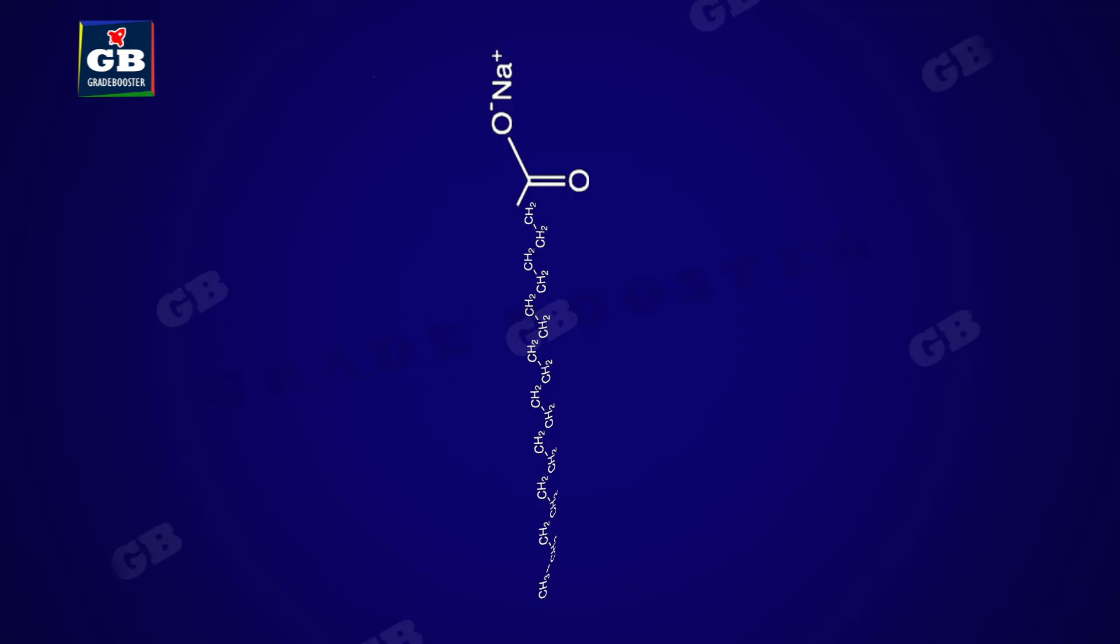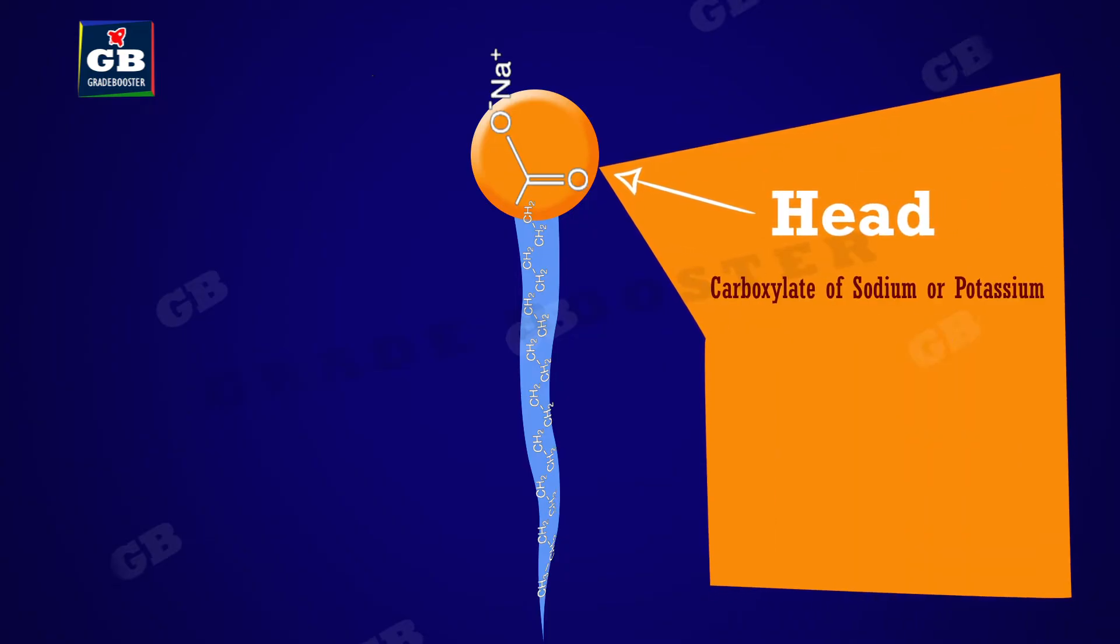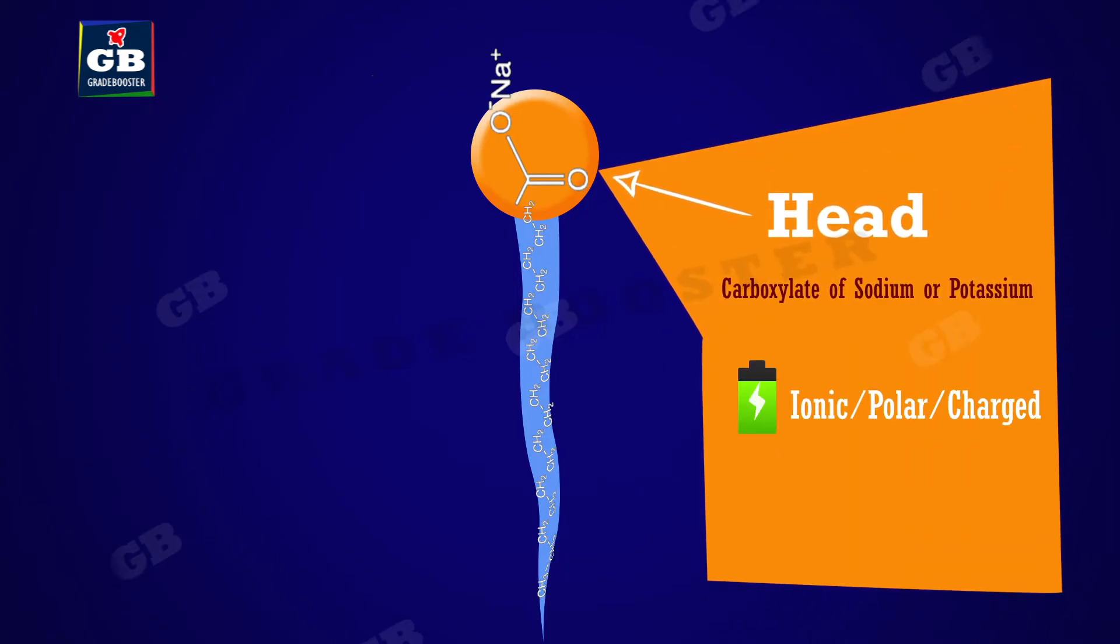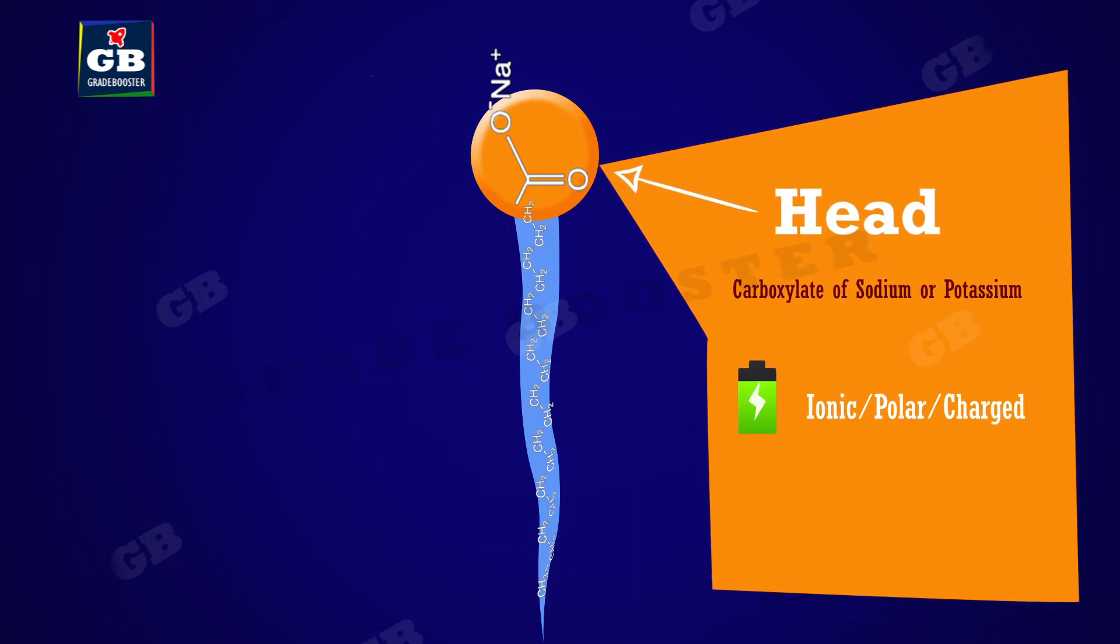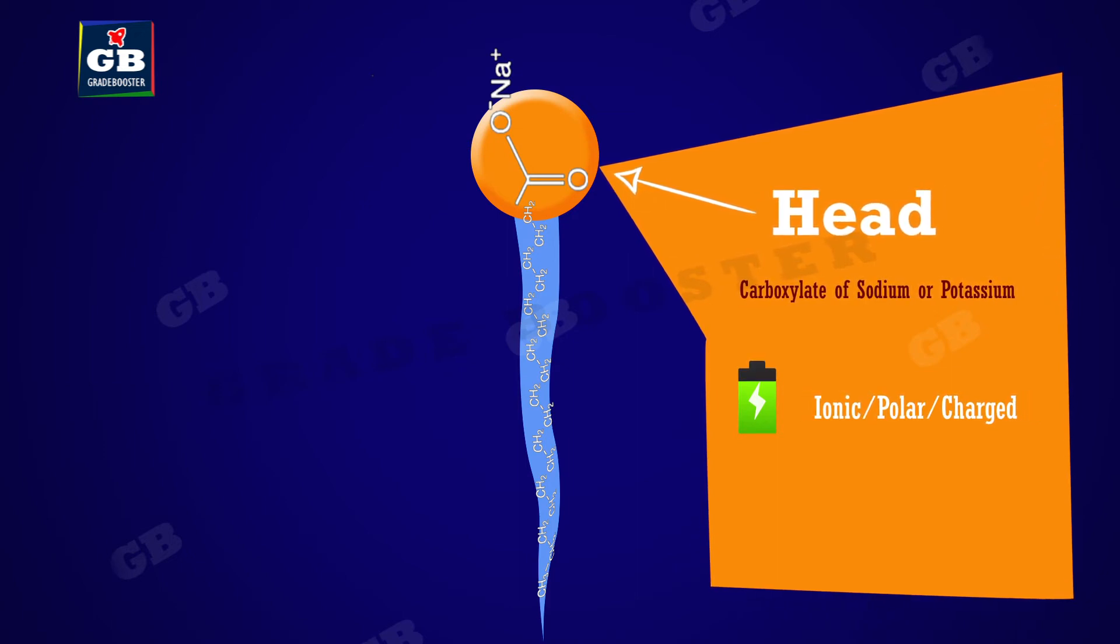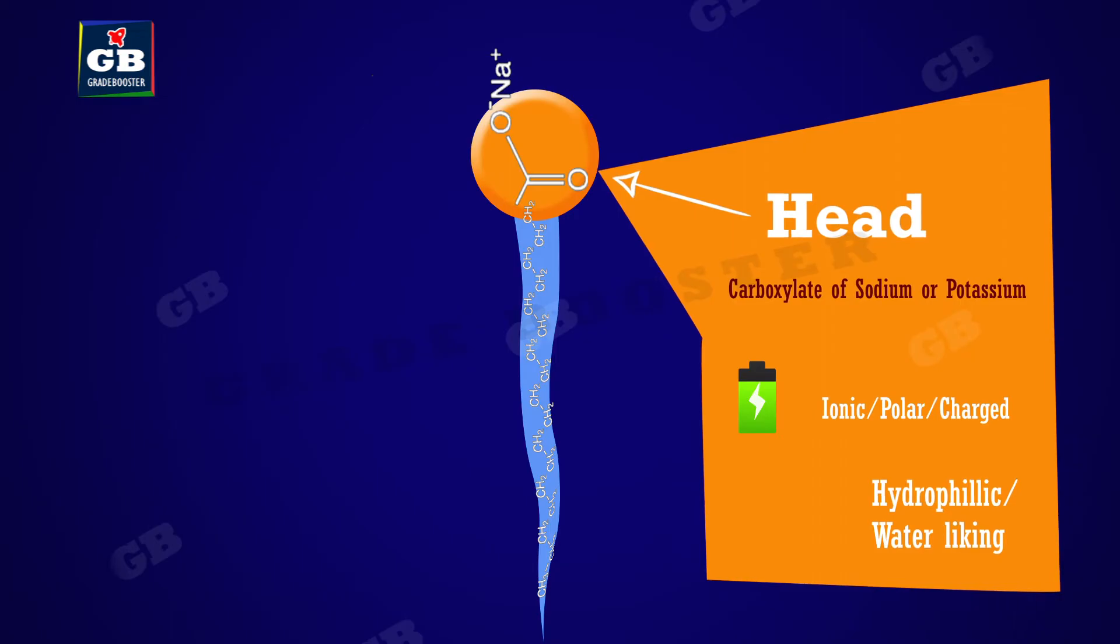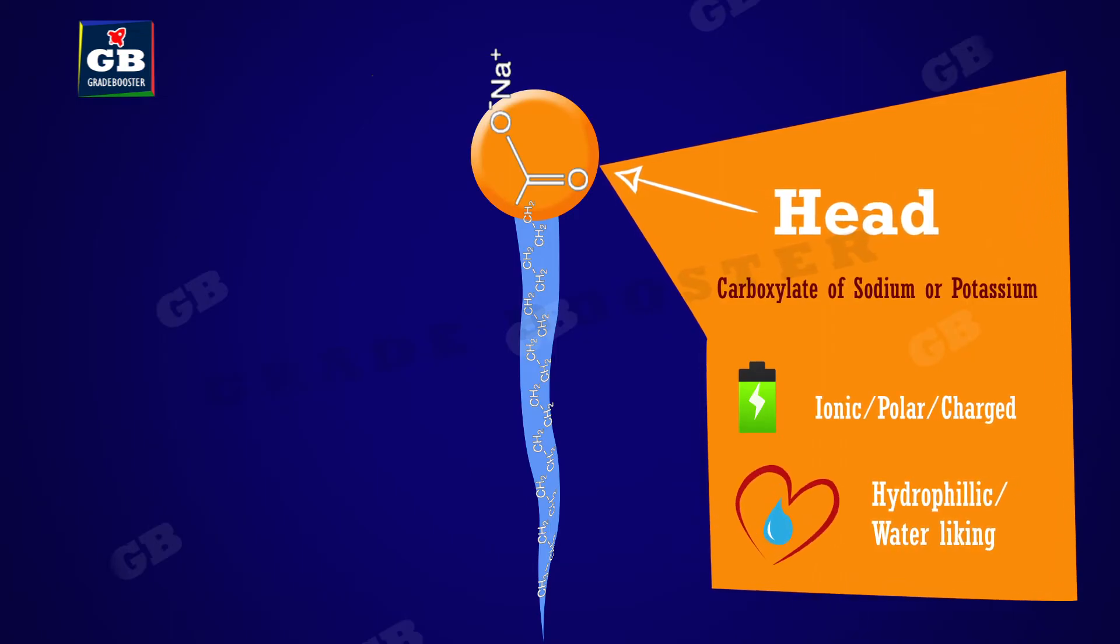The head consists of carboxylate of sodium or potassium. It is ionic in nature, meaning it has some charge. It is hydrophilic, meaning it has attraction to water.